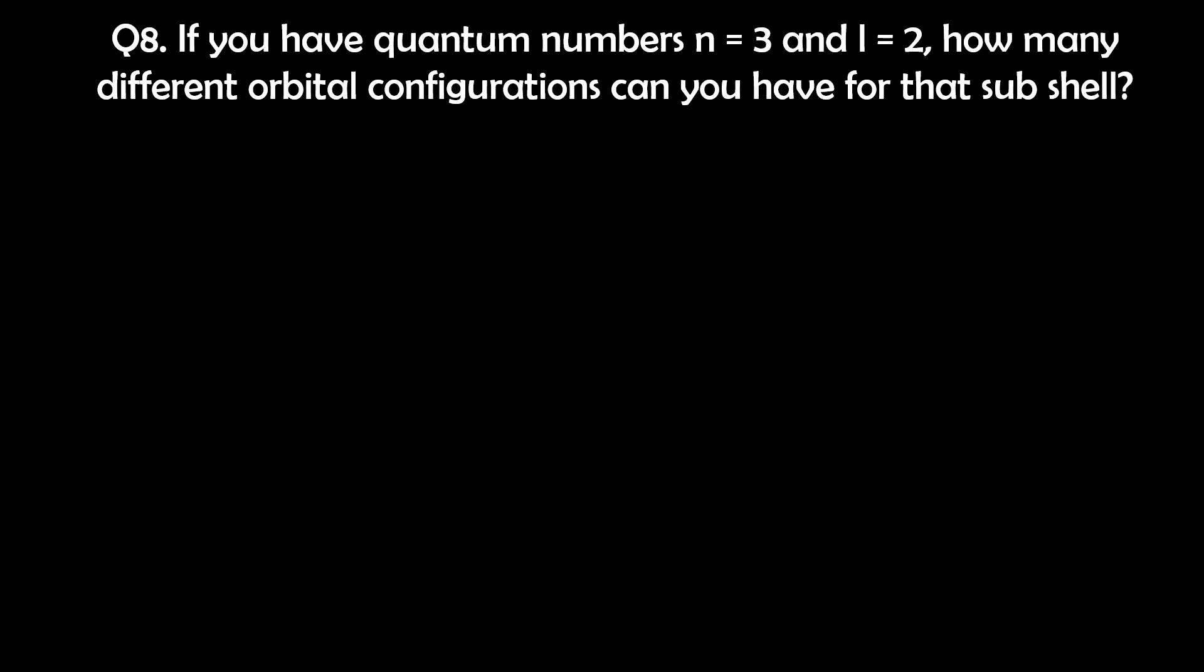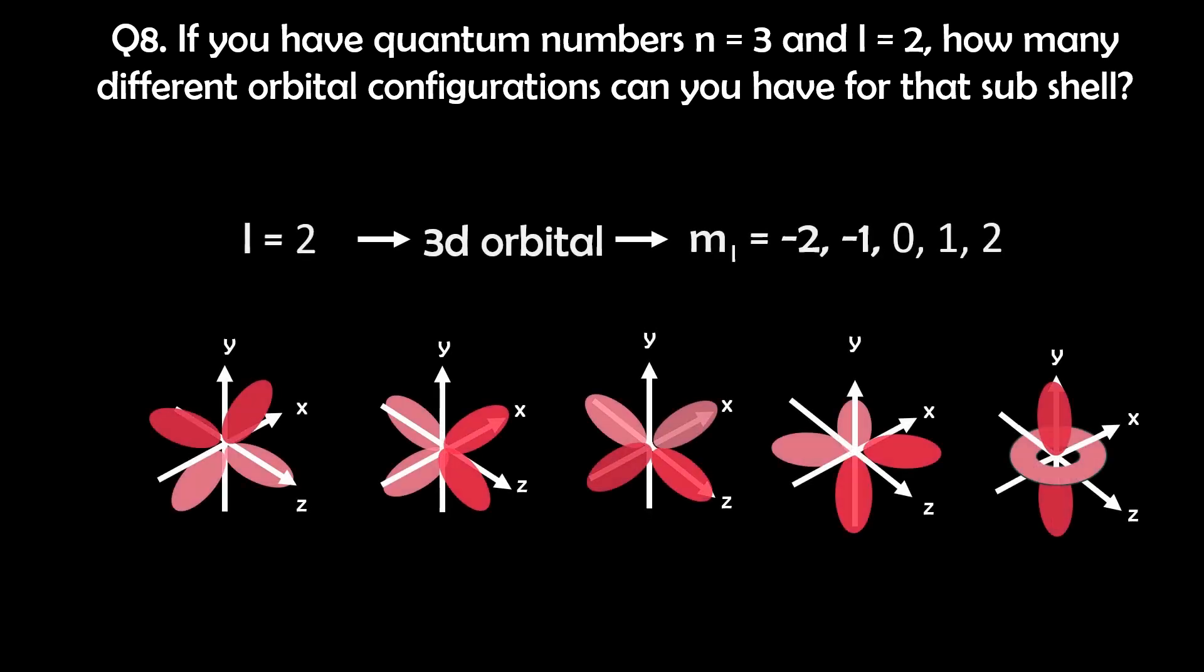Question 8. If you have quantum numbers N equals 3 and L equals 2, how many different orbital configurations can you have for that subshell? For quantum numbers N equals 3 and L equals 2, which is the d orbitals, we need to consider the magnetic quantum number M sub L and the spin quantum number M sub S to determine the number of configurations. For L equals 2, M sub L can have values from negative 2 to positive 2: negative 2, negative 1, 0, positive 1 and positive 2.